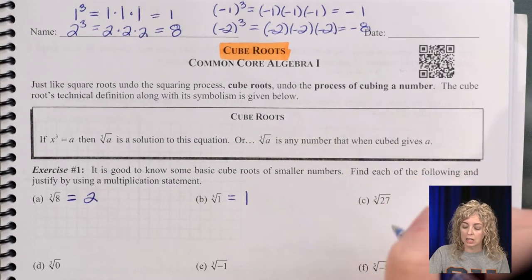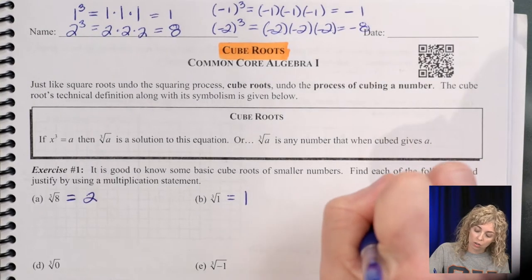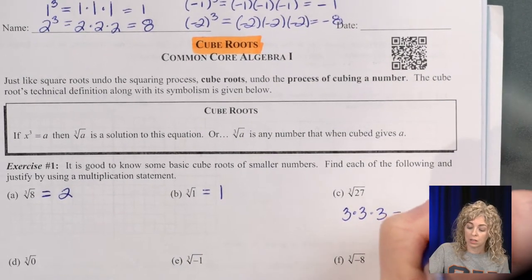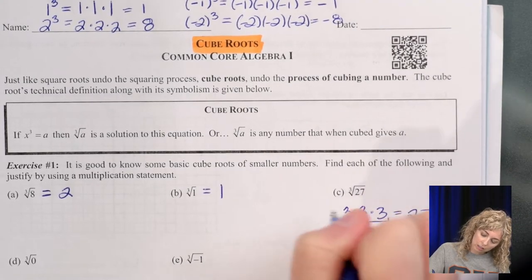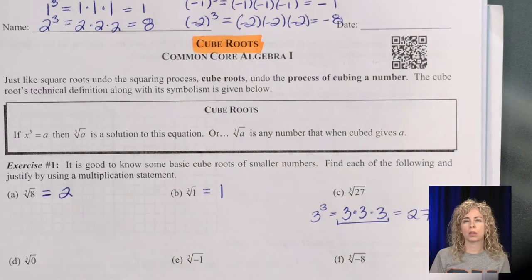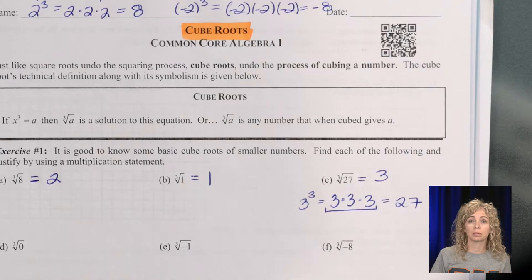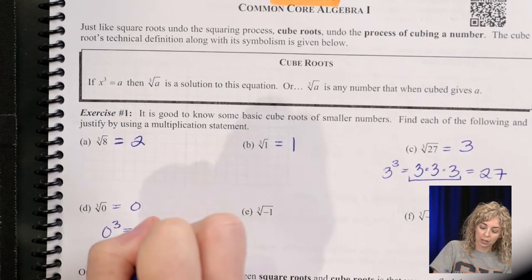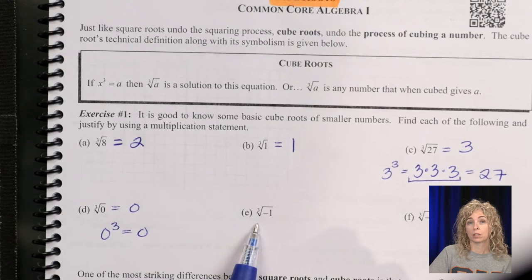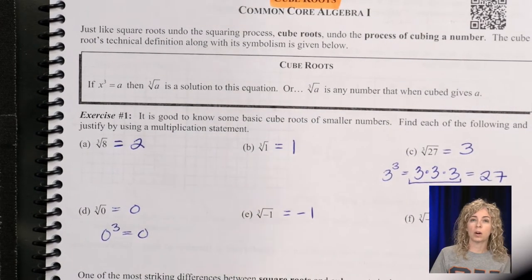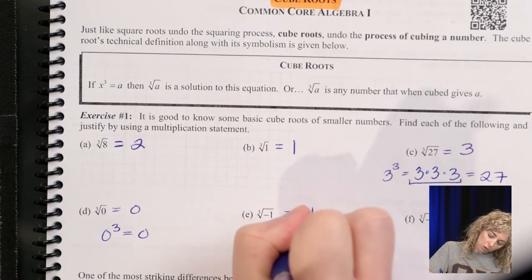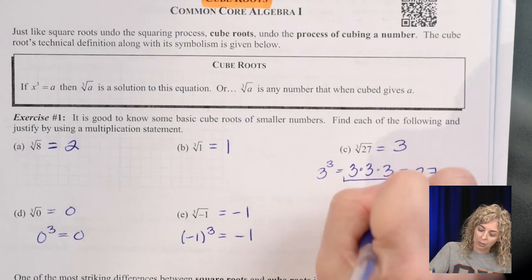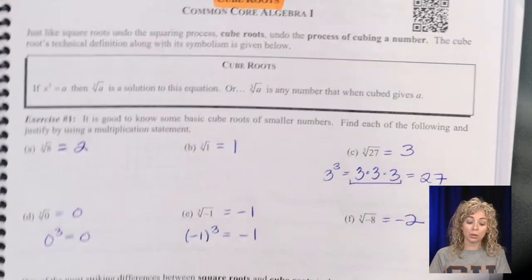So the cube root of 8 is 2, and the cube root of 1 is 1. Now the cube root of 27. So what number times itself 3 times? Let's see, 3 × 3 × 3 is 9 × 3 = 27. So to go backwards, because I can rewrite this as 3³, or 3 to the third power, the cube root of 27 is 3. The cube root of 0 is 0, because 0³ is 0. The cube root of negative 1 is negative 1, because (-1)³ equals negative 1. And the cube root of negative 8 is negative 2.